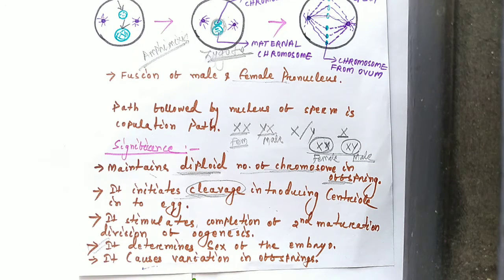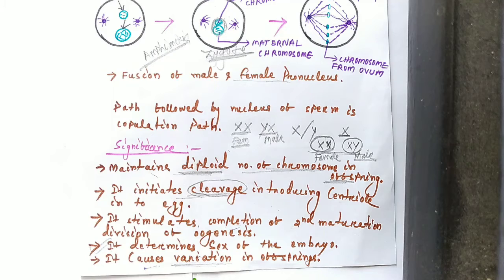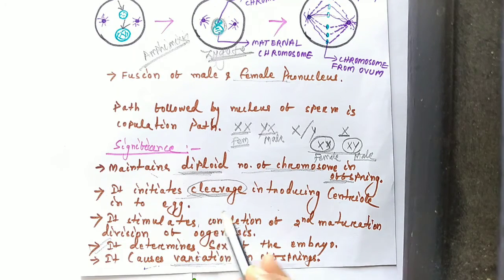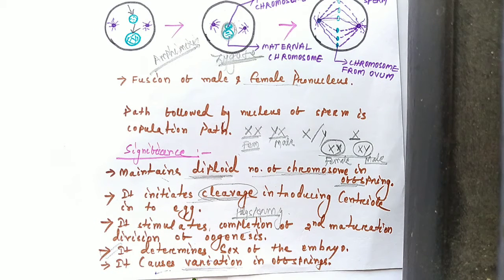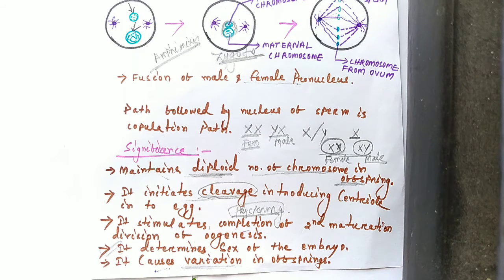Fertilization also causes variation in offspring. During fertilization, the maternal chromosomes present in the female pronucleus and the paternal chromosomes present in the male pronucleus fuse, causing variation in the offspring. Another important point is that fertilization prevents polyspermia by forming a fertilization membrane. This membrane is formed during fertilization and prevents the entry of more than one sperm into the ovum.